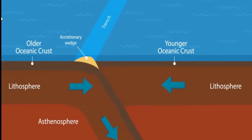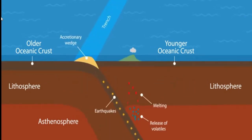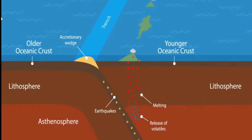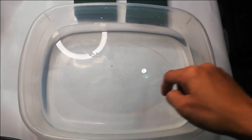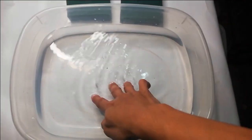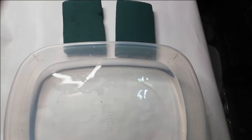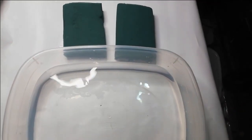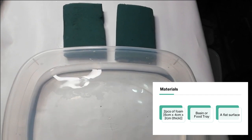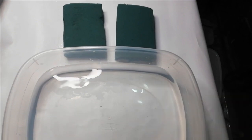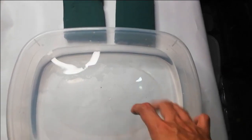Now let's study the geologic processes and events when two oceanic crusts collide or converge with one another. Try to perform this experiment to analyze the result of two colliding oceanic crusts. For this experiment you will be needing a rectangular basin or food tray half filled with water, two pieces of foam, and a flat surface.